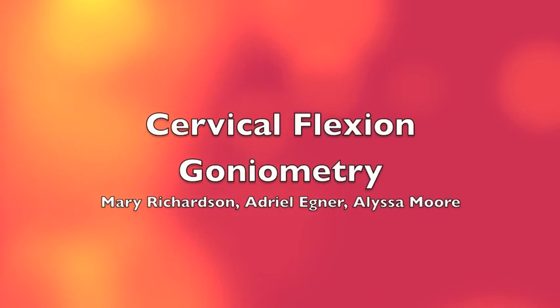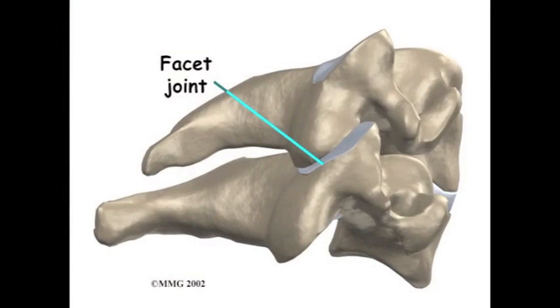Here is how to measure cervical flexion with a goniometer. Cervical flexion involves the movement of inferior facets anteriorly and superiorly on the superior facets of the inferior vertebra.